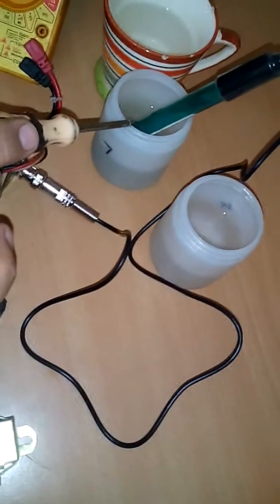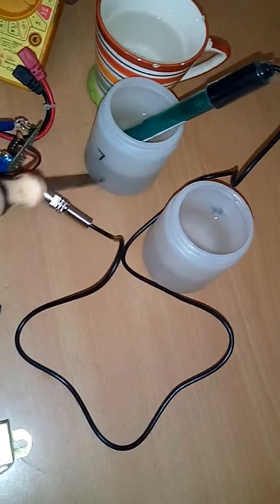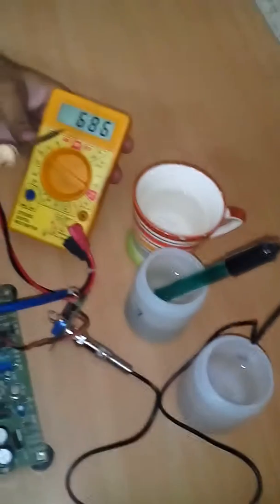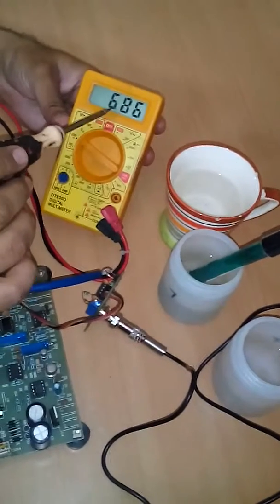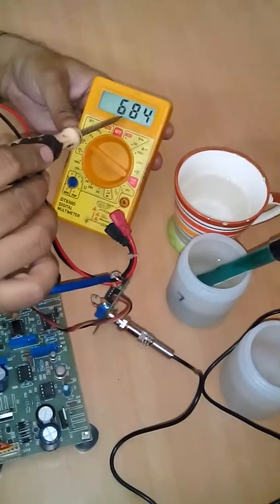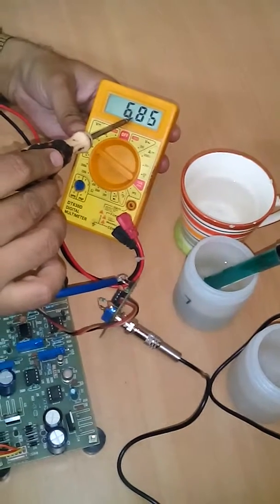We have dipped the electrode in this buffer solution and the reading should be 7. But right now the multimeter is showing 684. Just insert a decimal point at this place.